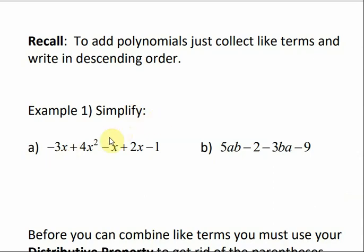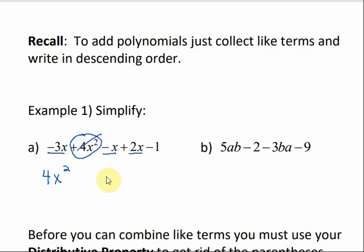Let's look at example a. We want to combine like terms and write in descending order. Starting with the biggest exponent: 4x squared has no like term, so we bring it down. Then combining the x's: negative 3x and negative x gives negative 4x, and negative 4x plus 2x gives negative 2x. The remaining constant negative 1 has no like term, so we bring it down. That's our polynomial in descending order.